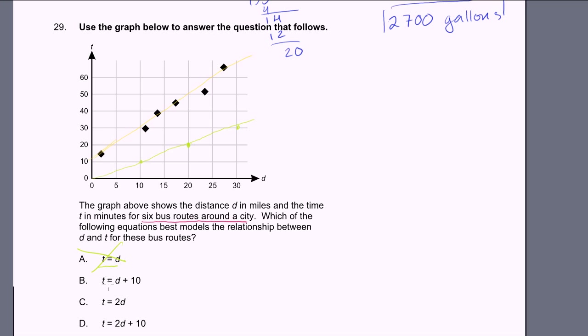Let me do another one. t is equal to d plus 10. So when d is 0, t will be 10. When d is 10, t will be 20. When d is 20, t will be 30. So it's going to look like this. It's an improvement, but it still doesn't look that great to me, so it's probably not that.